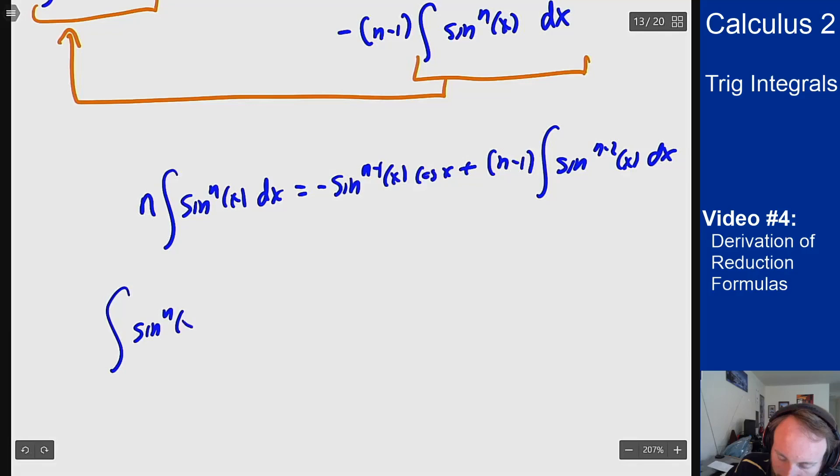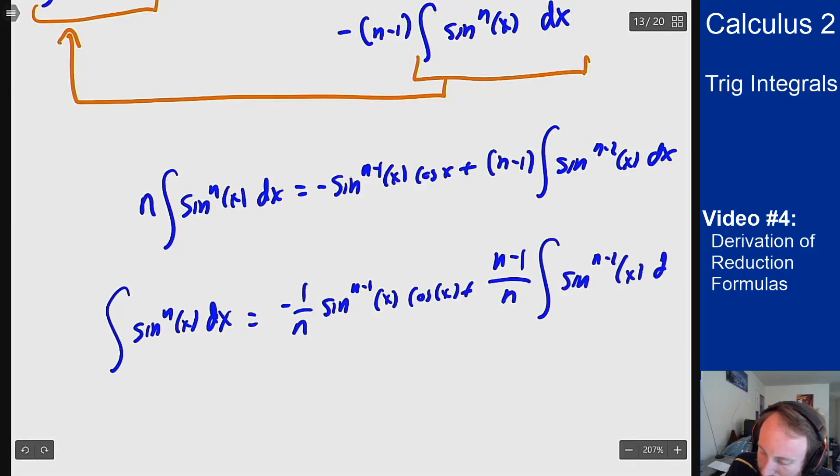Integral of sine to the n of x dx equals negative 1 over n sine to the n minus 1 of x cosine of x plus n minus 1 over n integral of sine to the n minus 2 of x dx.